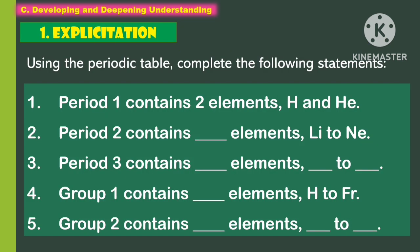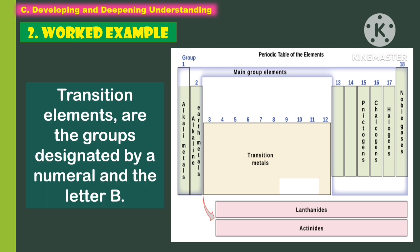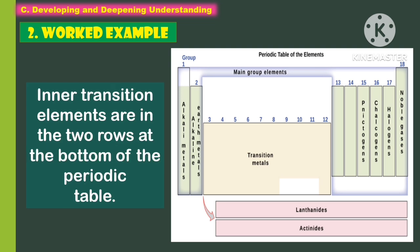For the explicitation, using the periodic table, complete the following statements. Representative, or the main group, are the elements in groups 1A through 8A. The transition elements are the groups designated by a numerical and the letter B. The inner transition elements are in the two rows at the bottom of the periodic table.